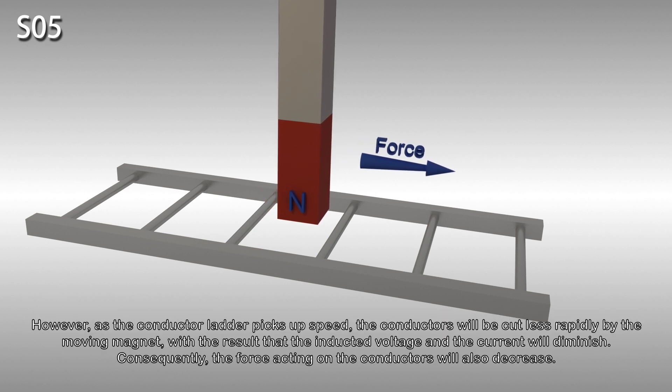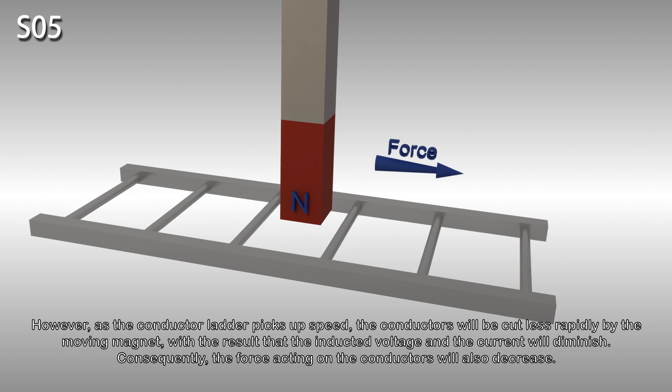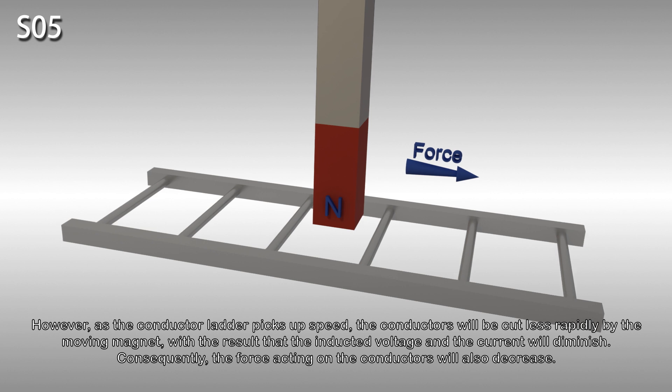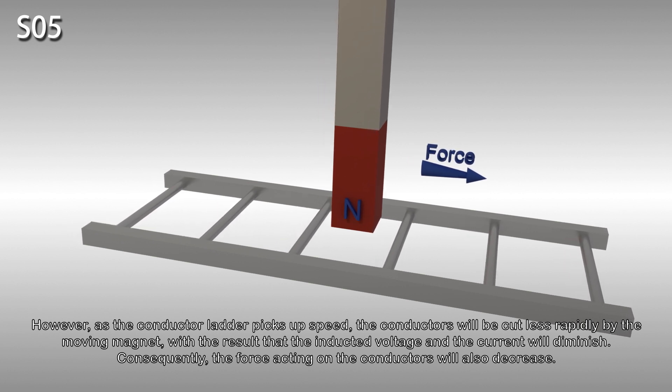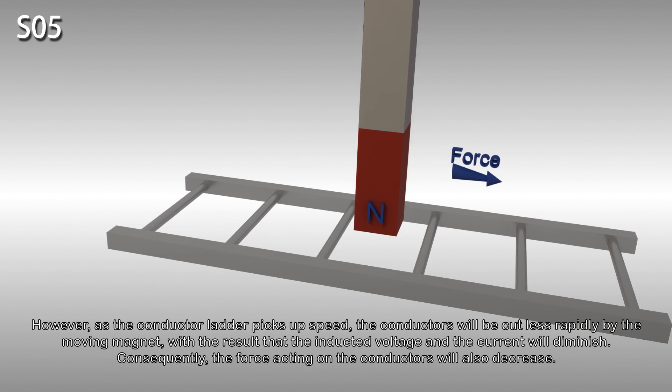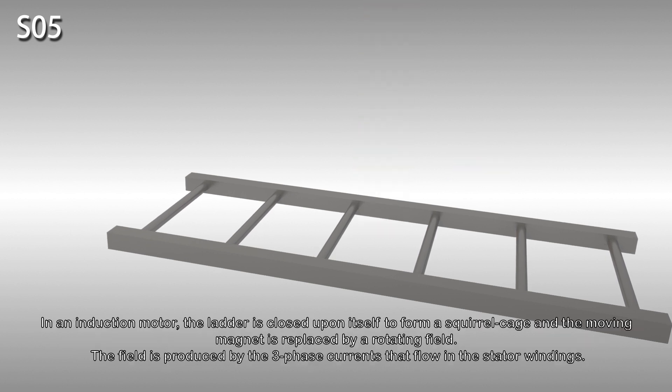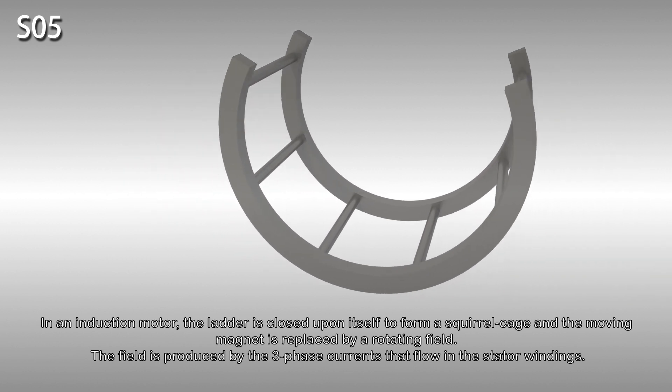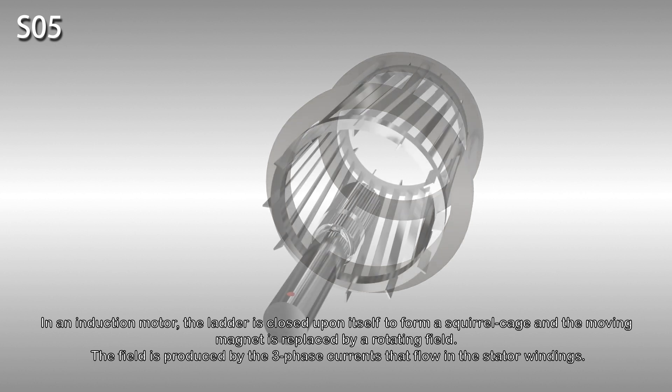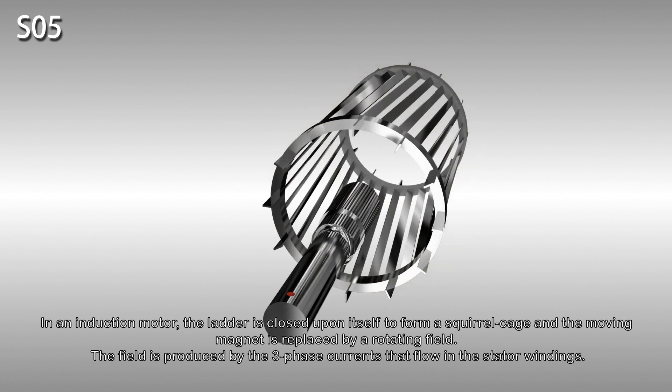However, as the conductor ladder picks up speed, the conductors will be cut less rapidly by the moving magnet, with the result that the induced voltage and the current will diminish. Consequently, the force acting on the conductors will also decrease. In an induction motor, the ladder is curved to form a squirrel cage and the moving magnet is replaced by a rotating field. The field is produced by the three-phase currents that flow in the stator windings.